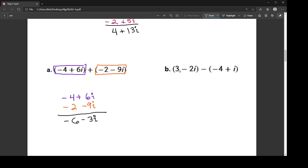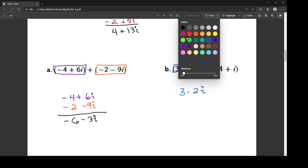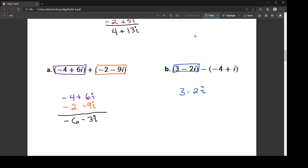Alright, so now part b. I'm going to write my first one down like normal, so I have 3 minus 2i. Now for this second one, another way to think about it, instead of just flipping the signs down here, is think about this as distribution. So I'm going to distribute the negative across the parentheses, which is why this negative 4 turns into a positive 4, and this positive i turns into a negative i.